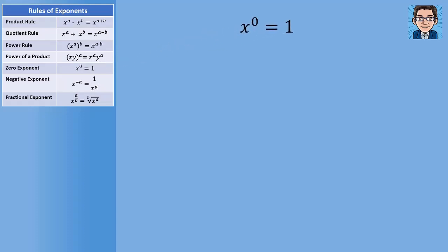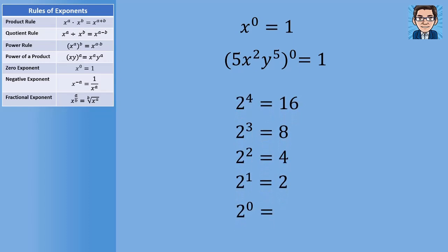The next rule tells us that anything to the zero power is one. So even if we've got something complicated raised to the zero power, we still get one. Let's see why that makes sense. Here I've got powers of two. Going up from two to the first to two to the second, we multiply by two. Going down from two to the fourth to two to the third, we divide by two. Continuing down: divide by two to get four, divide by two to get two. So to go from two to the first to two to the zeroth, we divide by two, which gets us one.